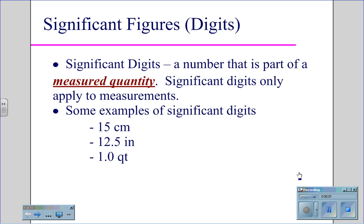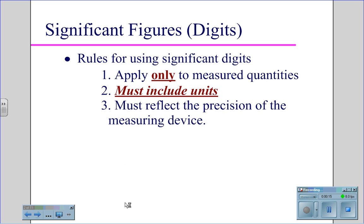Significant digits refer to only measured quantities. Examples of significant digits would include 15 centimeters, 12.5 inches, 1.0 quarts, 10.5 grams, and 7 meters per second squared. These digits are always measured quantities and therefore must include units. Also, a significant figure must reflect the precision of the measuring device.